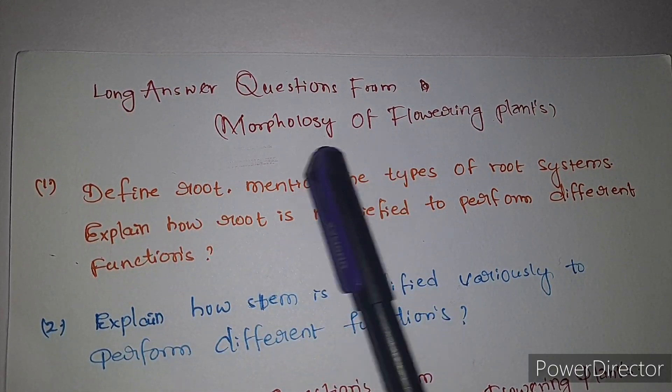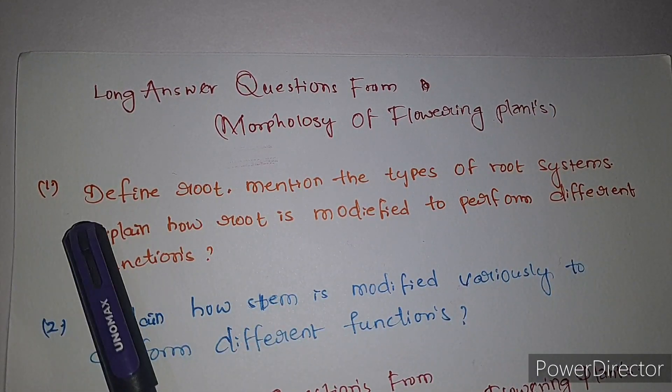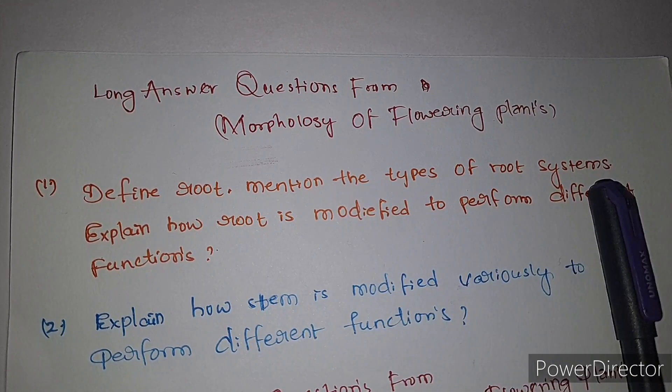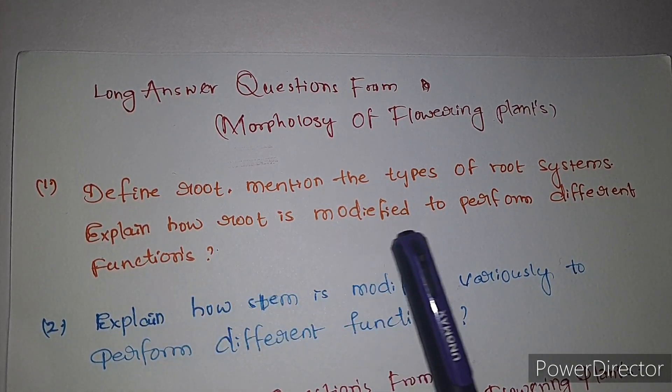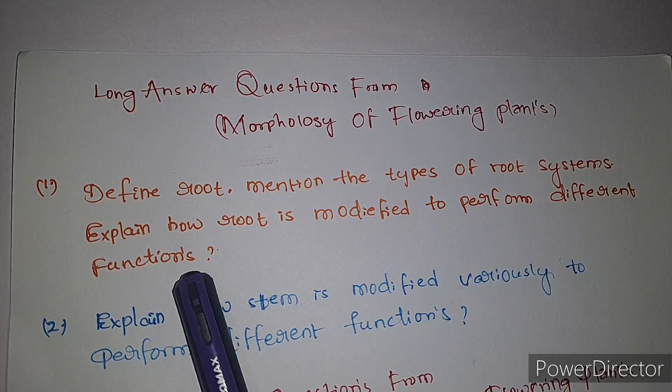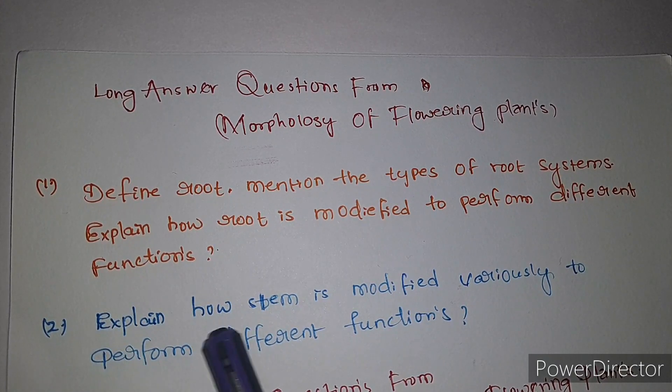First, long answer questions from morphology of flowering plants. First question: define root, mention the types of root systems, and explain how root is modified to perform different functions. Second question: explain how stem is modified variously to perform different functions.